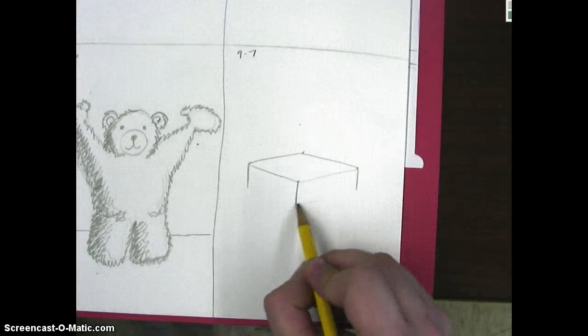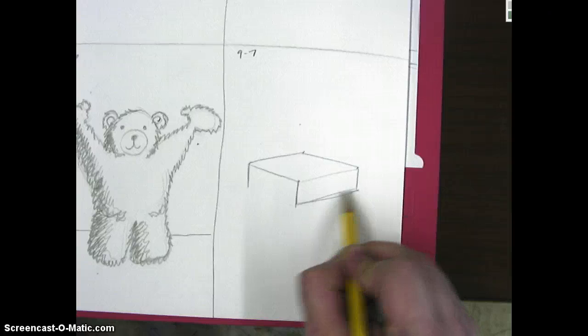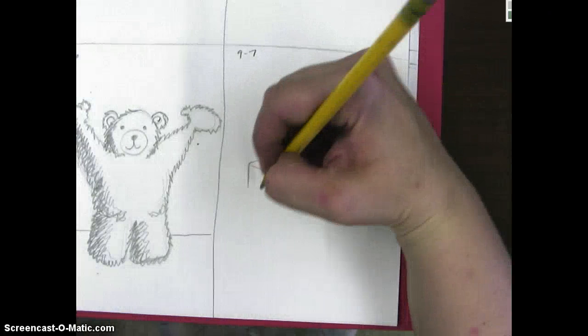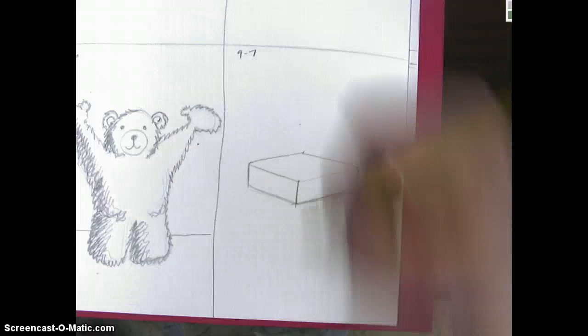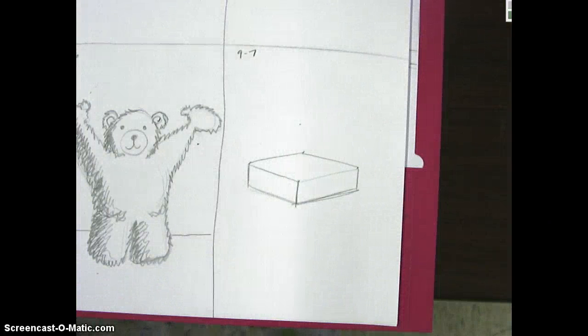Here to here, connect. Just like that, same angle. Here to here, connect. Right now, this is just the base of the chair, the seat. We need to add some legs next.